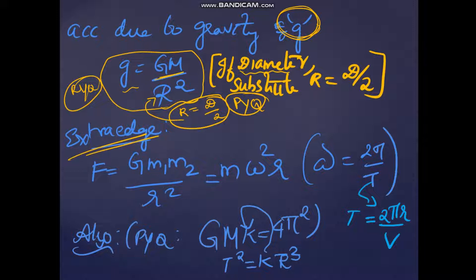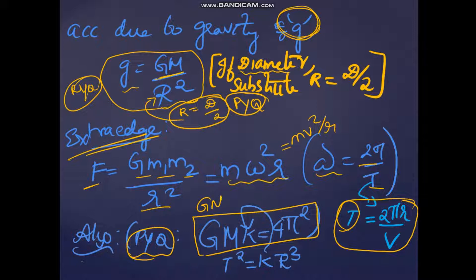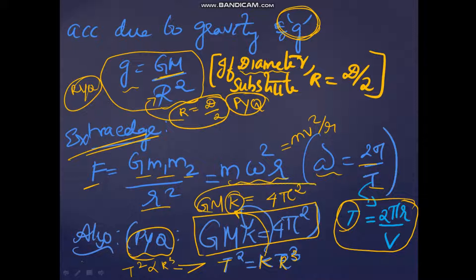Now let us see certain extra edges. The universal law of gravitation gives F = Gm1m2/r². In certain cases you must apply F = mω²r or F = mv²/r. Omega is equal to 2π/T, and T = 2πr/v, used according to the condition given. Another previous year application: remember the equation GMk = 4π², where k comes from Kepler's third law — T² = kr³, and GMk = 4π².